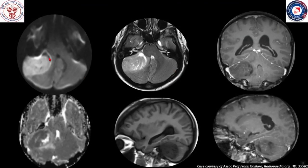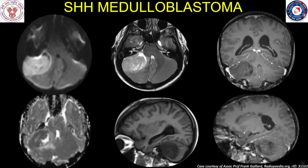This was a child who had a mass involving the lateral aspect of the right cerebellar hemisphere showing restricted diffusion on diffusion-weighted images, dark on ADC maps, iso-intense to the grey matter on T2-weighted images, hypo-intense on T1-weighted images, and showing heterogeneous post-contrast enhancement. The mass extended to the surface abutting the tentorium cerebelli. When such a mass is encountered in a child, a diagnosis of SHH or Sonic Hedgehog type of medulloblastoma needs to be considered.